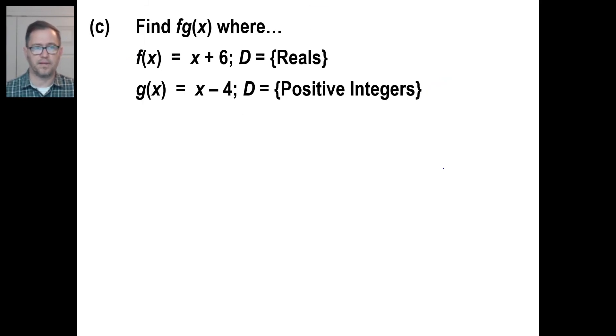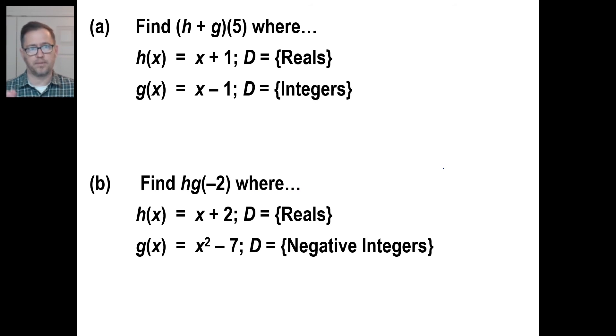Let's try the three practice problems. So go ahead and pause and try a. First off, h plus g of five. Does five fit into the reals and the integers? Yes, which means you can go ahead and solve this. So we're adding this. So we've got five plus one, which will be six. We're gonna add that to five minus one, which is four. So the answer is 10, and there you go.